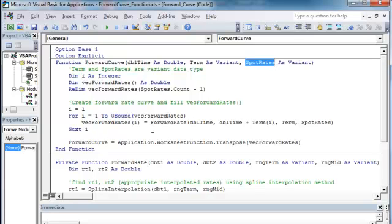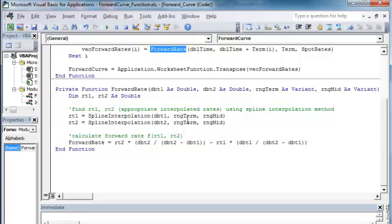So this function runs and then it calls for each time that we want to calculate a forward rate. It's going to calculate or it's going to call the function forward rate which is right here. It's going to pass at the appropriate T1 and T2 as well as our term and yields. And then we're going to calculate RT1 and RT2 using a spline interpolation function.